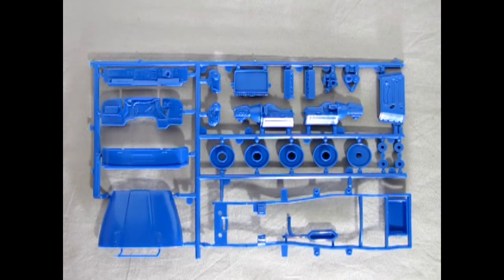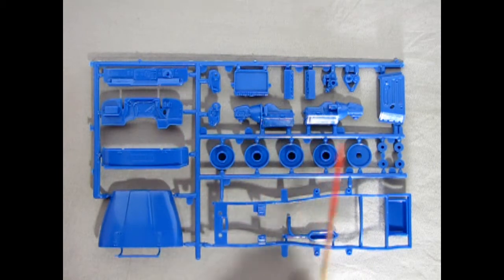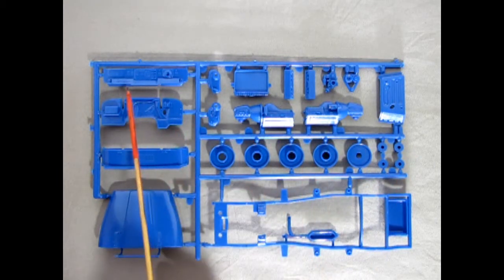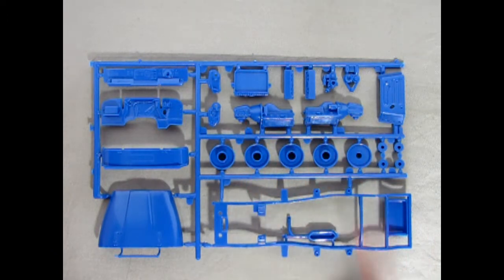Our Jeep model kit consists of five great big part trees and the detail on here is pretty nice and quite easy and crisp. As you can see we got our dashboard, firewall, cowl, hood, engine components, and our frame and chassis as well as the wheels.